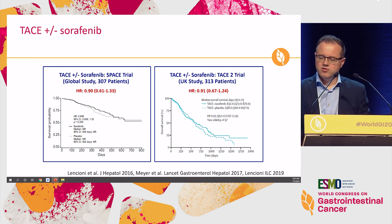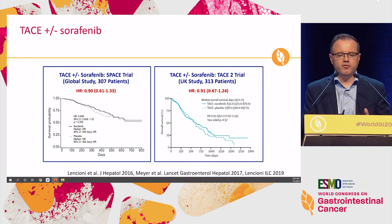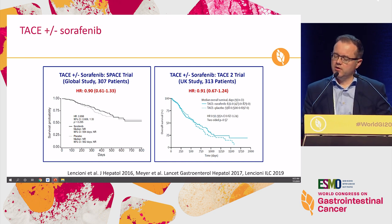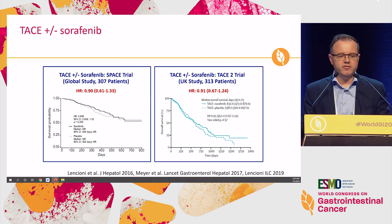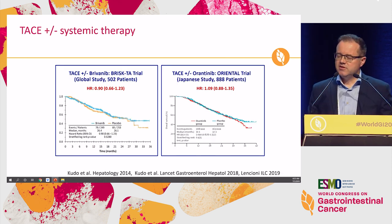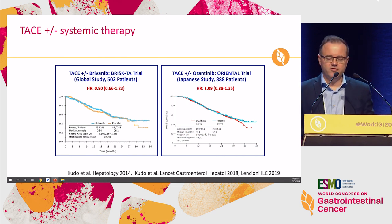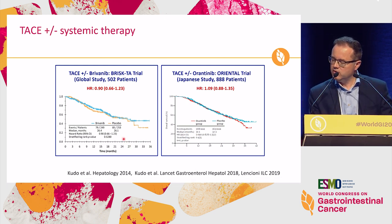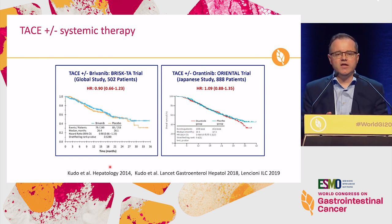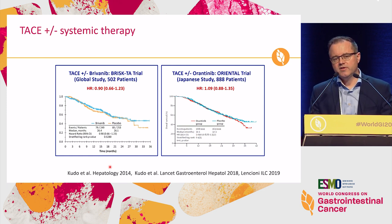What about TACE combined with sorafenib? Following TACE there is upregulation of angiogenic factors, and attempts to improve results with sorafenib and other angiogenic drugs have produced sufficient evidence to say there is no benefit. Other systemic therapies — brivanib or axitinib — were all negative. Importantly, looking at the placebo arm across trials, survival with TACE alone is quite consistently 26 to 32 months, confirming the long-term survival benefit of TACE in patients with intermediate-stage HCC.